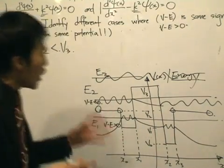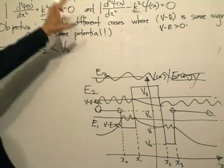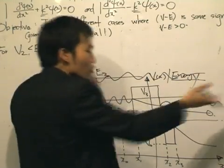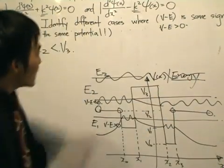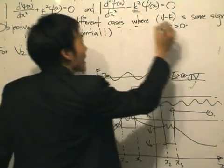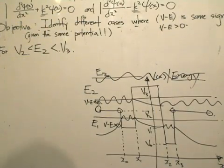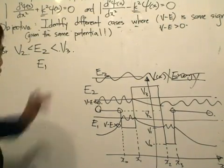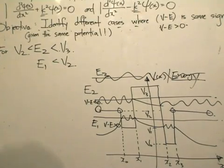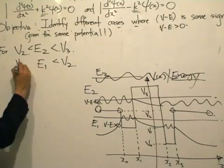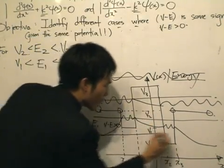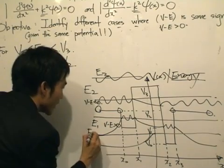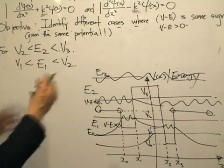As you can already see, we can't write the solutions to the Schrödinger equation together for these two energy values, because one is oscillating throughout and the other is oscillating, decaying, then oscillating. That is what we need to pay careful attention to — identifying the different cases where E minus V is of the same sign. For E₁, the upper bound is less than V₂, and the lower bound will be V₁.